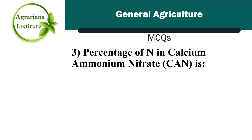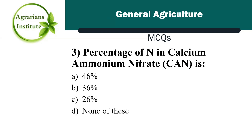Next MCQ: the percentage of nitrogen in calcium ammonium nitrate is — Option A is 46%, Option B is 36%, Option C is 26%, and Option D is none of these. The correct answer is C, 26%. Calcium ammonium nitrate is a slow supplier of nitrogen.